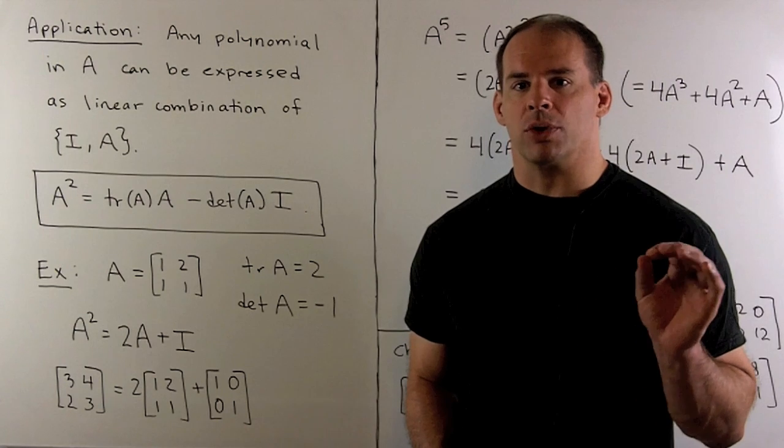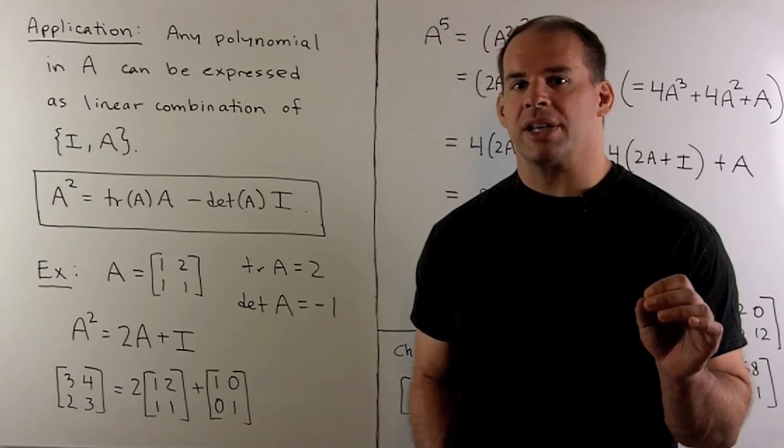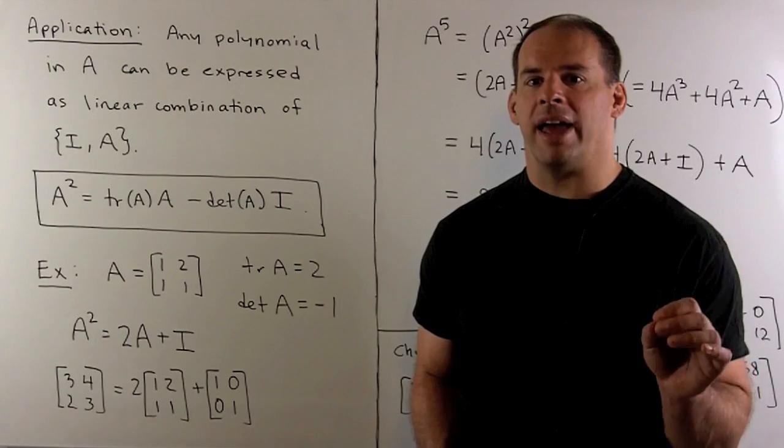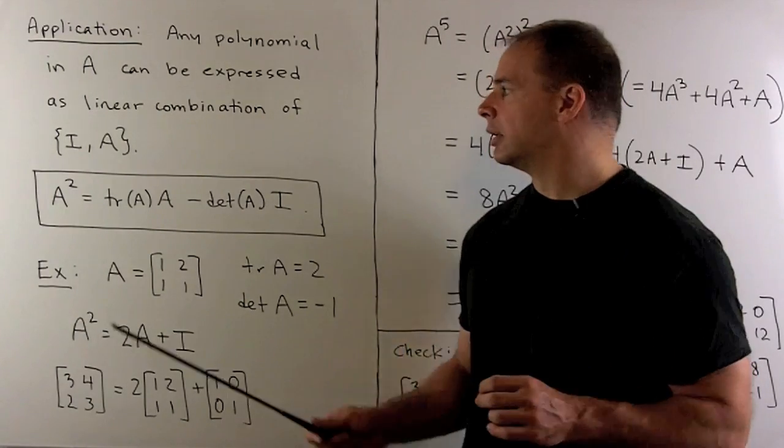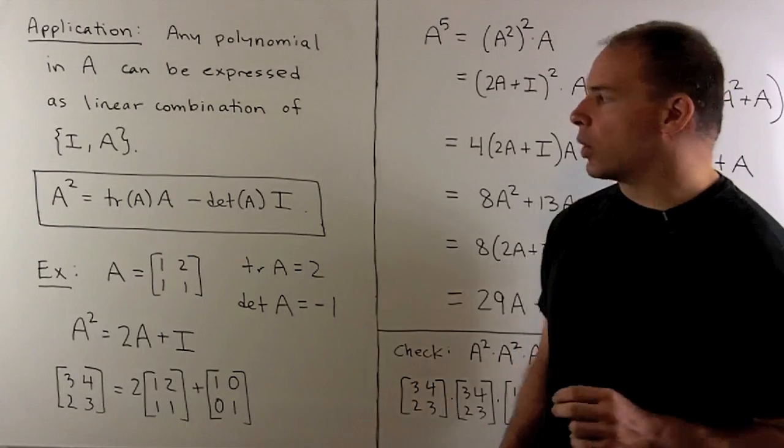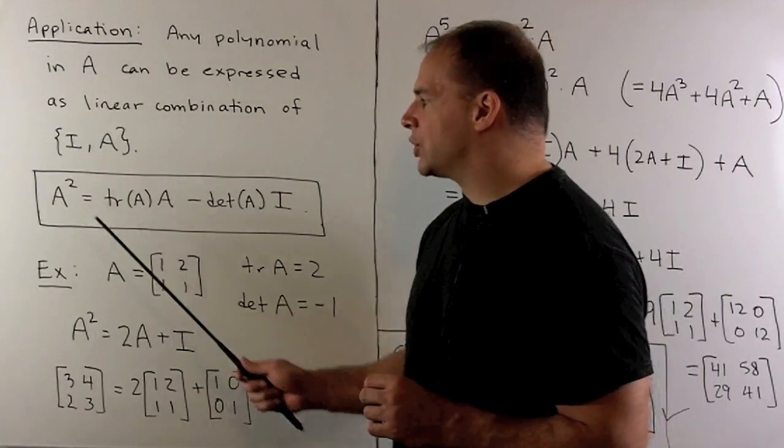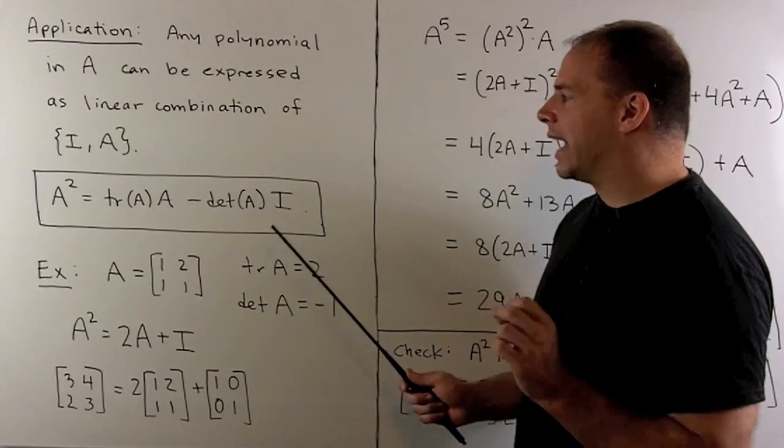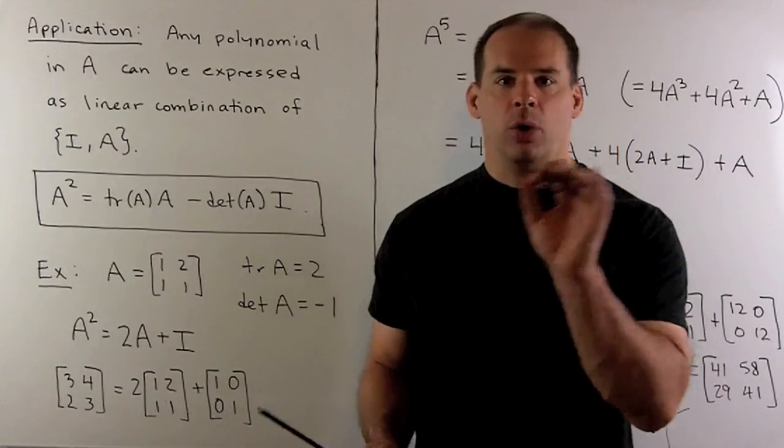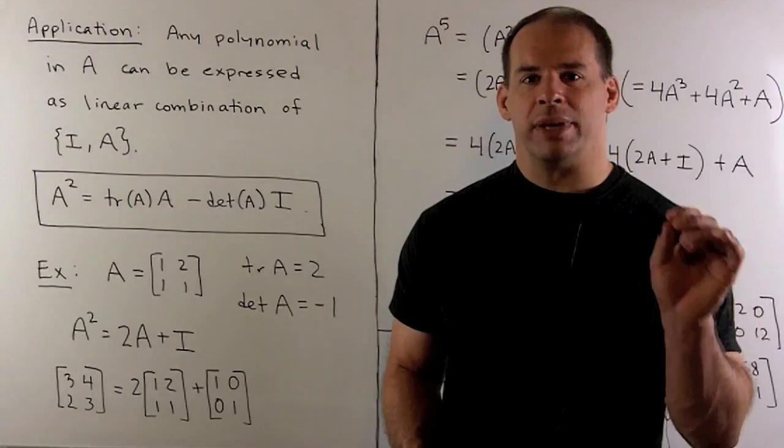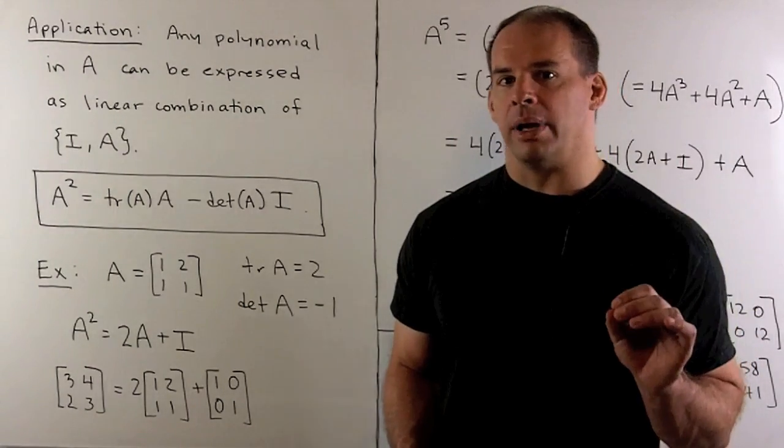As a nice application of our result, we could express any polynomial in A as a linear combination of A and the identity matrix. If we isolate the A squared in our equation, we have A squared written as linear combination of A and the identity matrix. So, the idea is, if I have a polynomial in A, we could keep reducing our powers recursively until we get down to A and the identity matrix.